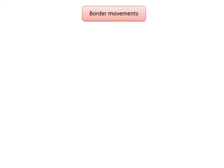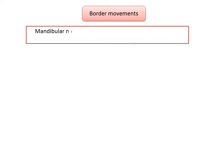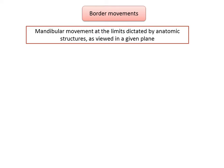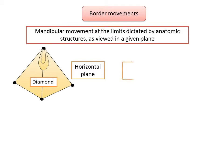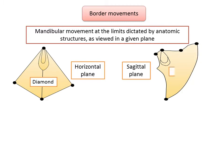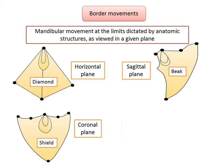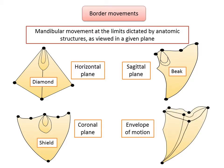Based on the extent of movement, mandibular movements can be classified as border and intra-border movements. Border movement is defined as mandibular movement at the limits dictated by anatomic structures, as viewed in a given plane. Border movements are recorded in three different planes: extreme movements in the horizontal plane produce a characteristic diamond tracing; extreme movements in the sagittal plane produce a characteristic beak tracing; and extreme movements in the coronal plane produce a characteristic shield tracing. Combining the border movements of all three planes gives a three-dimensional space called the envelope of motion.